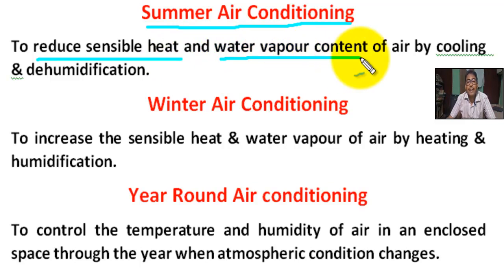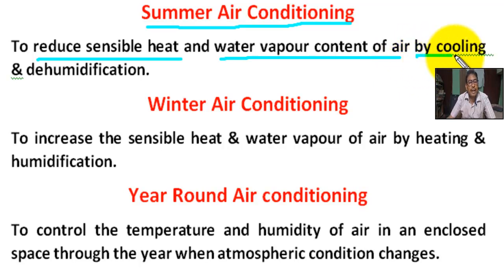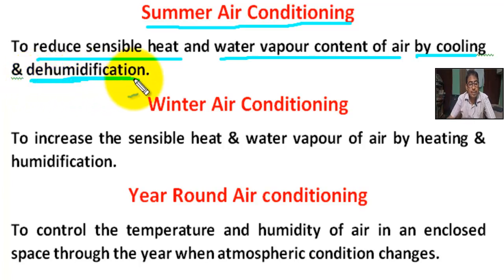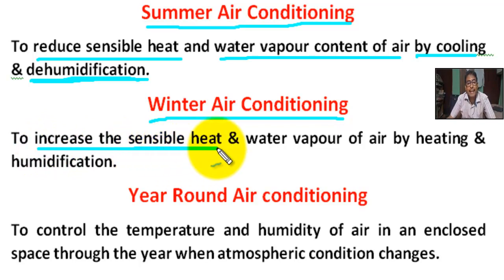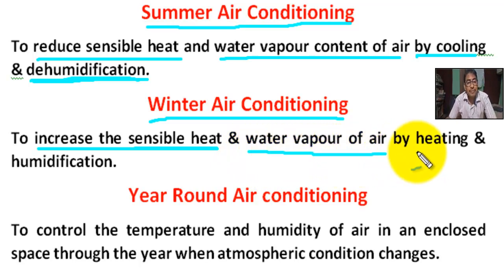In summer air conditioning, the goal is to reduce sensible heat — that means reduce temperature and reduce water vapor content in the air — by cooling and dehumidification. Dehumidification means reducing the humidity, reducing water particles in the air. In winter air conditioning, the goal is to increase sensible heat — increase the temperature of air and increase water vapor by heating and humidification. Humidification means increasing the water content in the air.